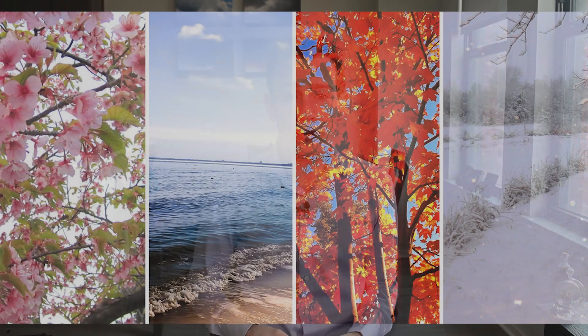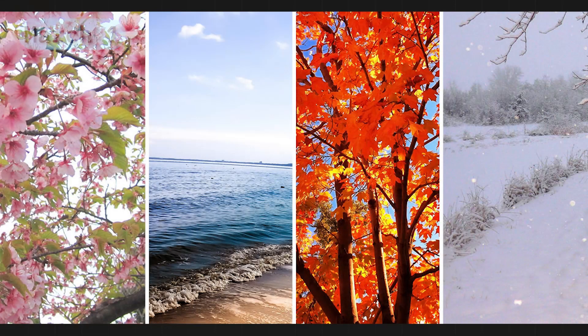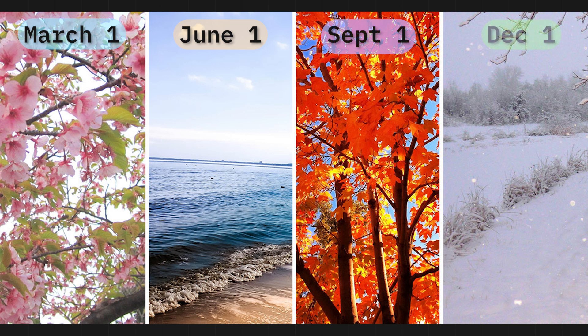We could also examine the meteorological definition of the seasons, which are blocked off by calendar months. Meteorological spring begins on March 1st, summer on June 1st, fall on September 1st, and winter on December 1st. I personally like that — after all, December, January, and February are the three coldest calendar months — but it's still not perfect.